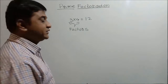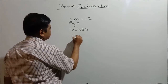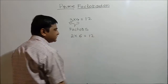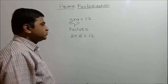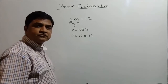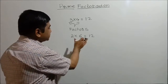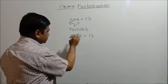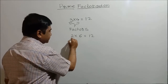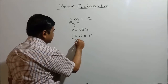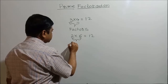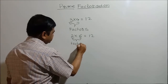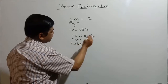12 can also be written as 2 multiplied by 6, which is also 12. In this case, what are the factors of the product? The factors of 12 are 2 and 6. Again, 2 and 6 are known as factors of 12.